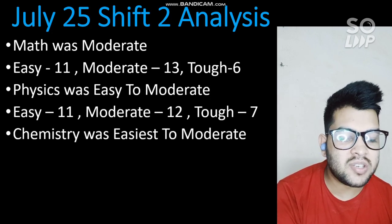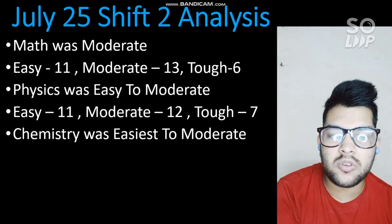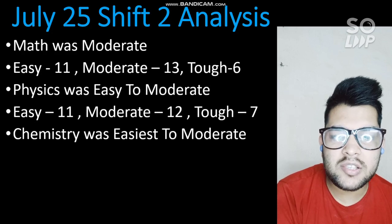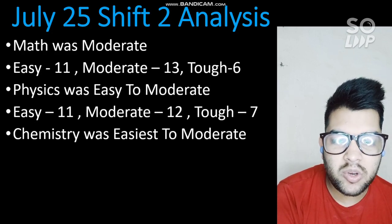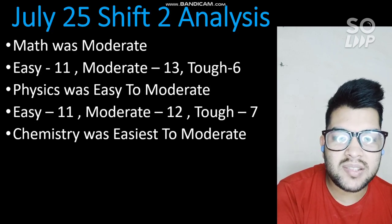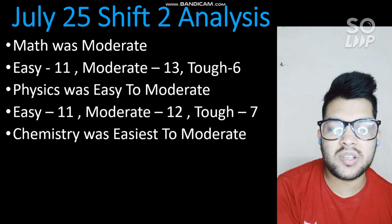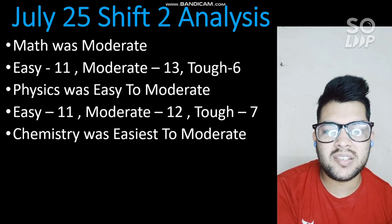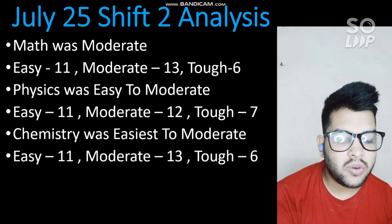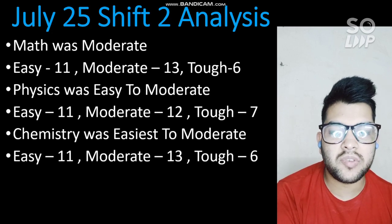For Chemistry, the difficulty was easy to moderate, with some tricky questions. Most chemistry questions are usually from the NCERT book, but in this shift two or three questions were from outside the NCERT syllabus. You can expect some tricky questions in the next shift as well. Easy questions: 11, moderate: 13, tough: 6.